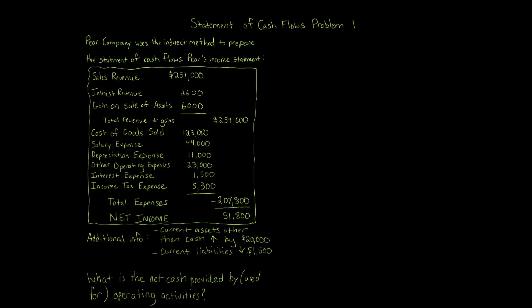Statement of cash flows, problem one. Pair Company uses the indirect method to prepare the statement of cash flows. The income statement is as follows: sales revenue $251,000, interest revenue $2,600, gain on sale of assets $6,000, for total revenue and gains of $259,600. Cost of goods sold $123,000, salary expense $44,000, depreciation expense $11,000, other operating expenses $23,000, interest expense $1,500, income tax expense $5,300, for total expenses of $207,800, giving us net income of $51,800.